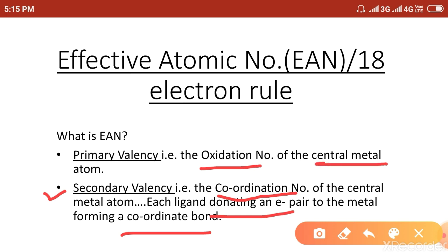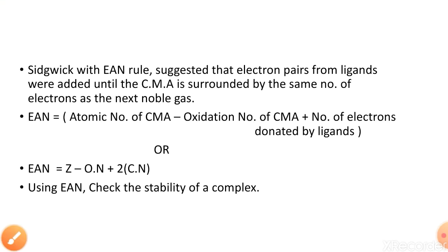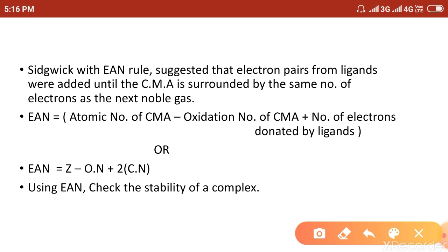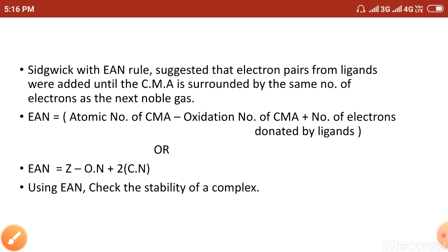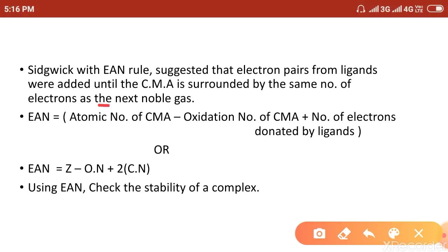The oxidation state of the central metal atom gives you the primary valency. Sidgwick gave the Effective Atomic Number rule, which states that the electron pairs donated from the ligands to the central metal atom surround it with the same number of electrons as the next noble gas configuration, and hence it becomes stable. The ligands donate electrons until the central metal atom acquires the stable configuration of the next noble gas.